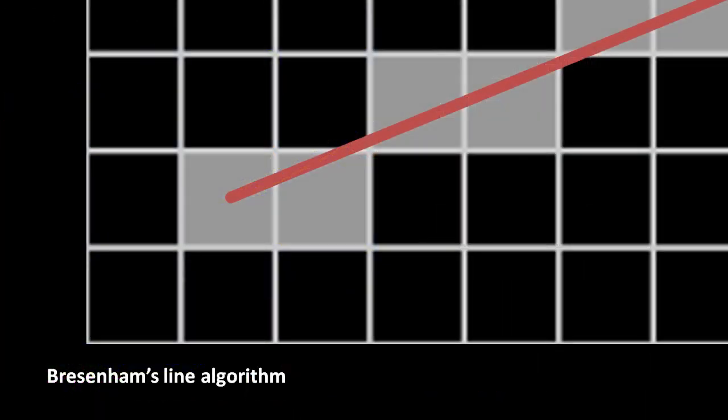Previously, we've gone over a so-called naive line drawing algorithm, which, while workable, doesn't have the best performance. Bresenham's line algorithm, named for its inventor Jack Bresenham, is the most commonly used method for drawing lines, as it requires using only addition and subtraction per pixel, instead of slower division and multiplication operations.